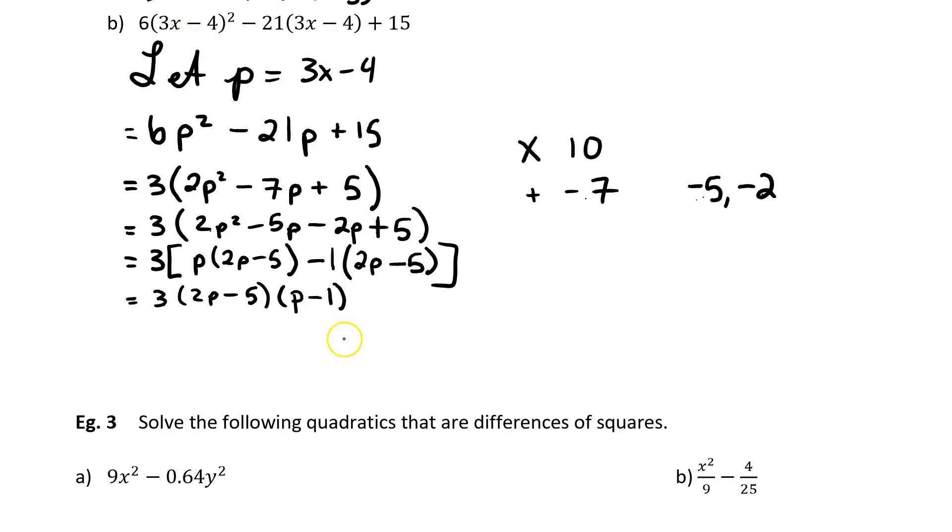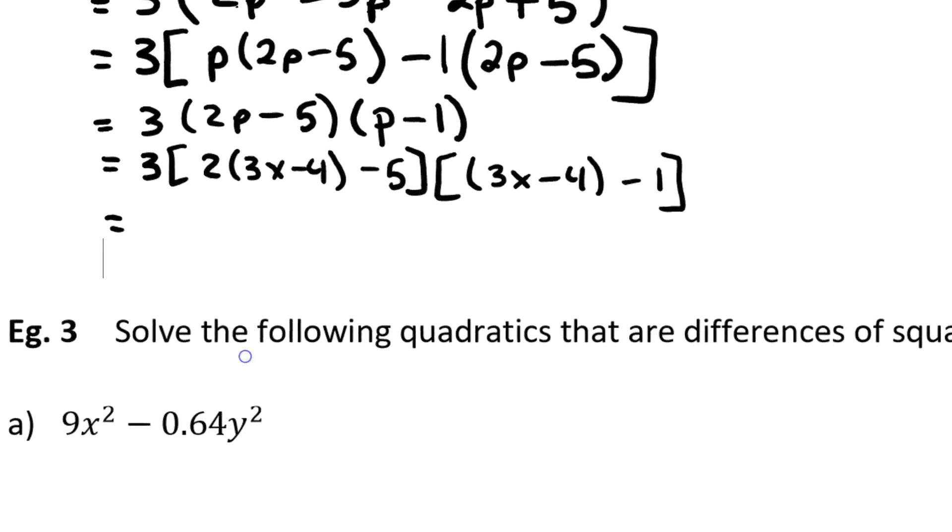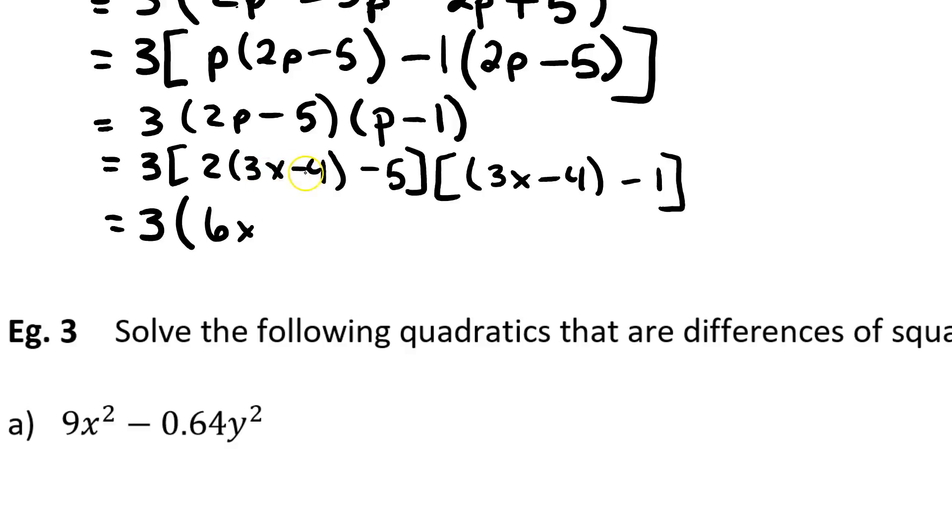Now, if I ask my question with x's, I expect my answer to have x's. So, I'm going to say 3 square bracket 2 times p, but we know that p is 3x minus 4, minus 5 square brackets, another square bracket, p is just going to be 3x minus 4 minus 1. So, then that equals 3 times 2 times 3x is 6x, 2 times negative 4 is negative 8 minus 5. And then this one, I can just drop the brackets, 3x minus 4 minus 1. Now, I'm going to collect those like terms, those constants. So, I have 3 times 6x minus 13, and then, I have 3x minus 5. And I'm done!